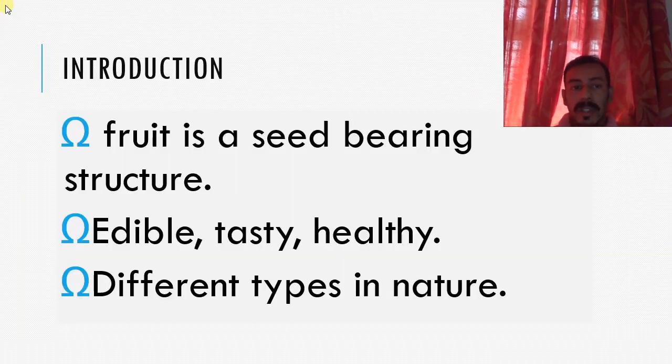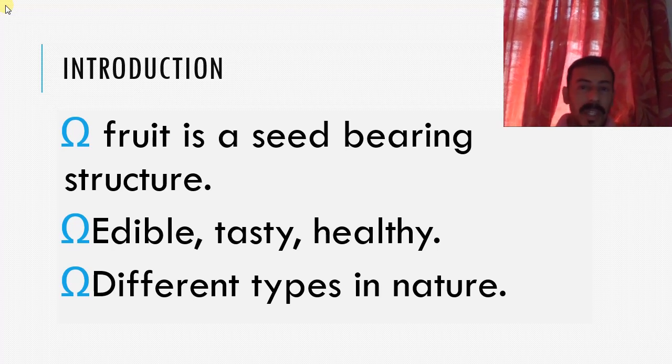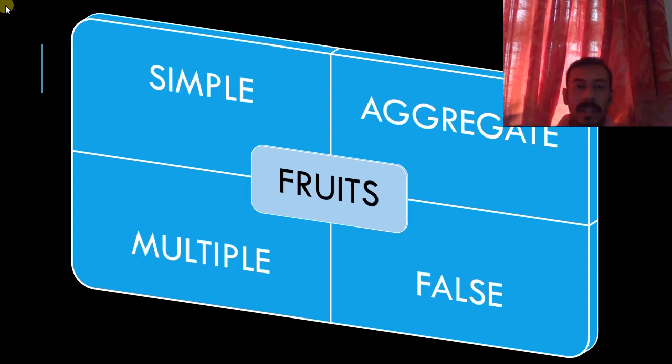So as an introduction, I am giving three points you have to remember. First, fruit is a seed bearing structure. It is usually edible, tasty, and usually healthy too. And there are many different types of fruits in nature. So let's classify them.